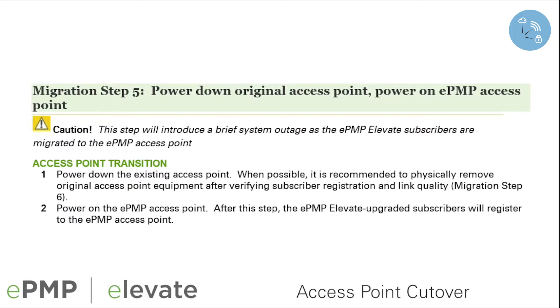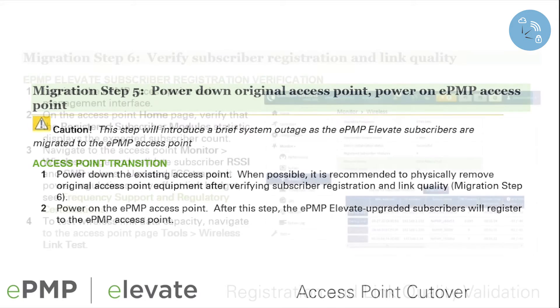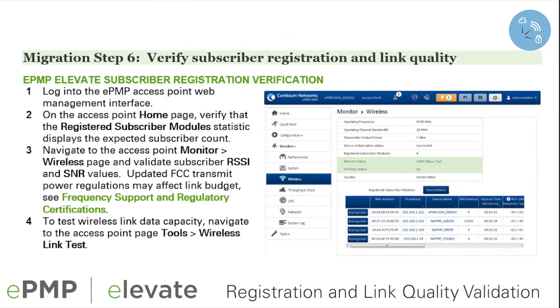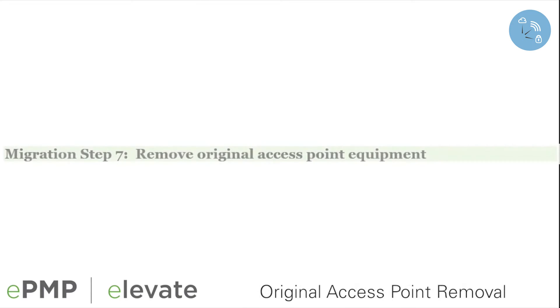Step 5 consists of the transition of subscriber registration from the original access point to the new ePMP access point. Once the ePMP Elevate subscribers have completed network entry, registration and link quality are validated in Step 6. After link validation, the original access point equipment may be removed.